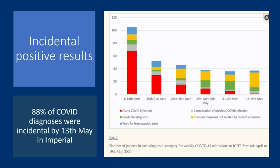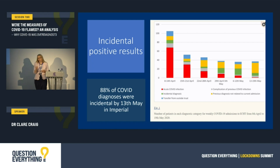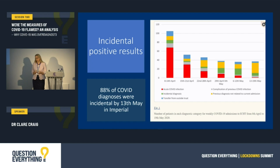In the summer in Swansea — admittedly when there wasn't a lot of real COVID around — they found 87% of their positive results were false positives. And a study in Spain, where they checked using antibody testing, found that even patients in ITU who were described as COVID patients, 53% of them never developed antibodies. They were false positives.